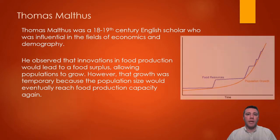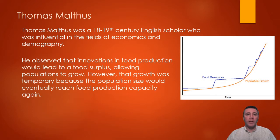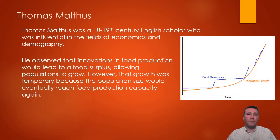Malthus observed that new ideas and innovations in methods for producing food would lead to a surplus of it. That surplus would allow for populations to grow in size. But because the growth of the population would eventually reach that new, technologically improved food production capacity, population growth would be hindered. This would create the need for the development of even newer and more advanced technologies to improve agricultural yield even more.